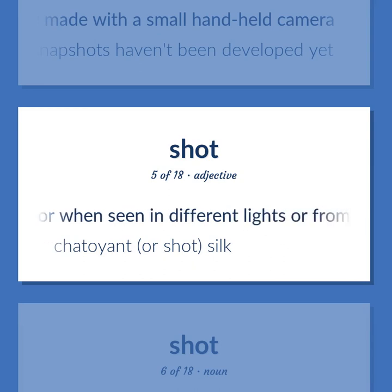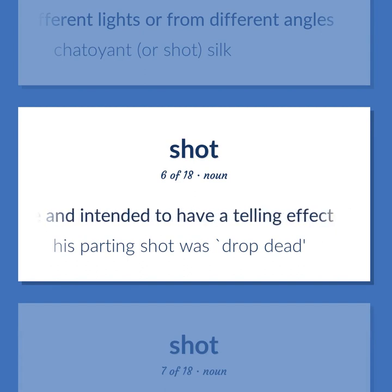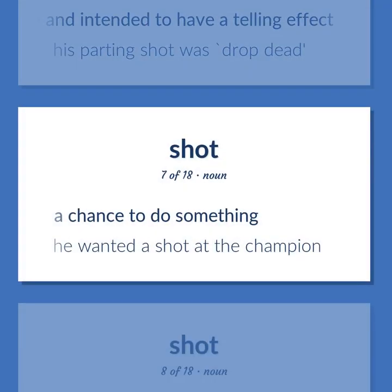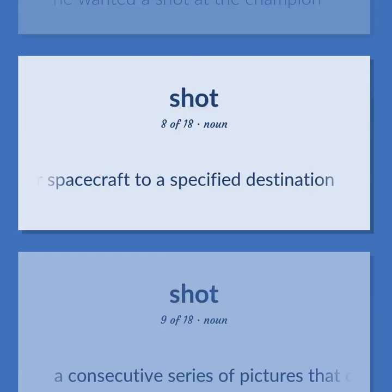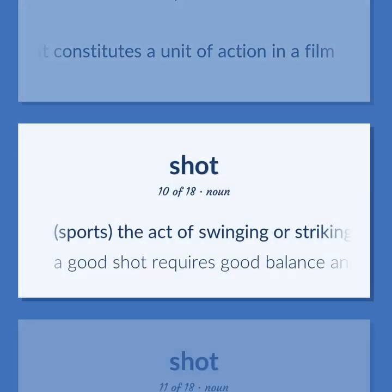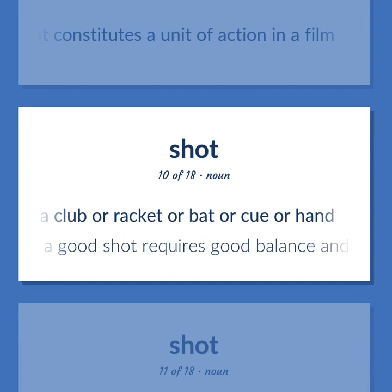Shot: Varying in color when seen in different lights or from different angles — chatoyant, or shot, silk. An aggressive remark directed at a person like a missile and intended to have a telling effect — his parting shot was 'Drop dead.' A chance to do something — he wanted a shot at the champion. The launching of a missile or spacecraft to a specified destination. A consecutive series of pictures that constitutes a unit of action in a film. Sports: the act of swinging or striking at a ball with a club or racket or bat or cue or hand — a good shot requires good balance and tempo.